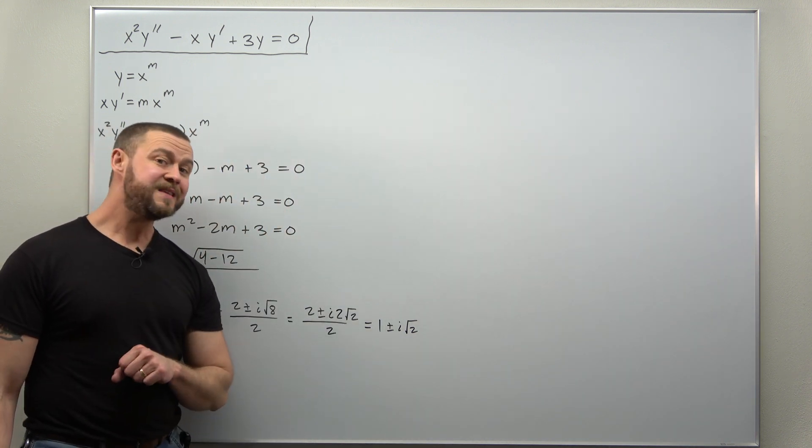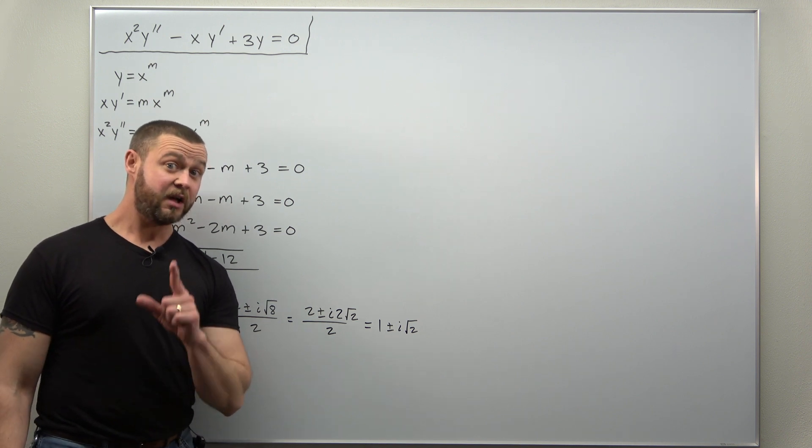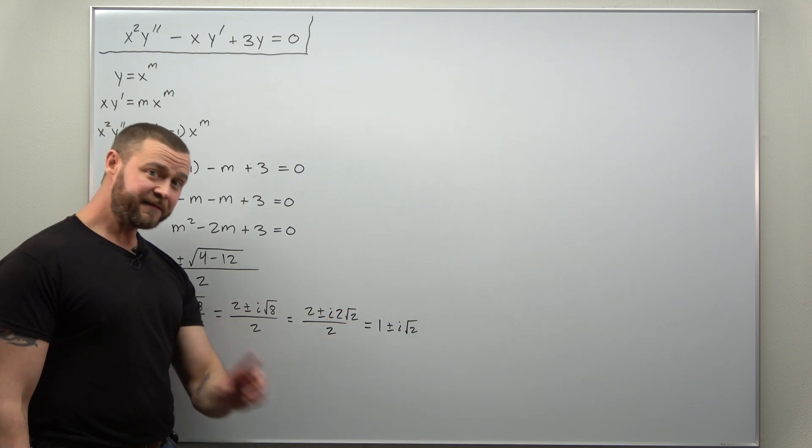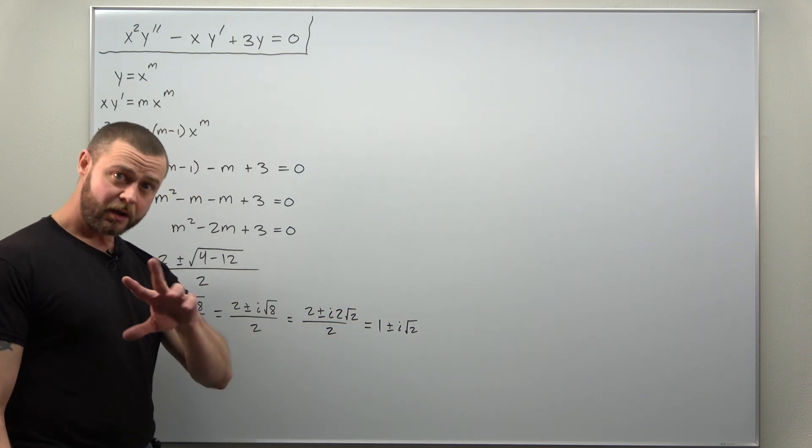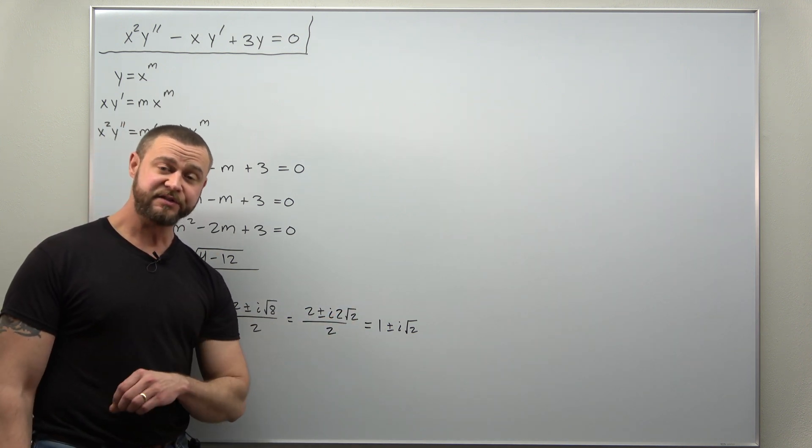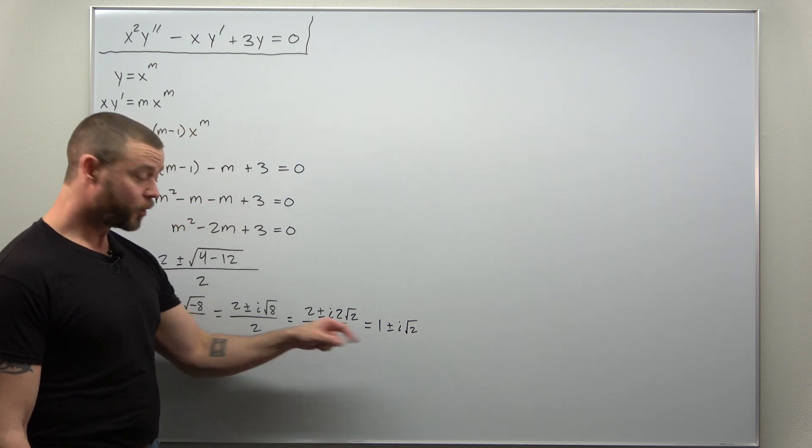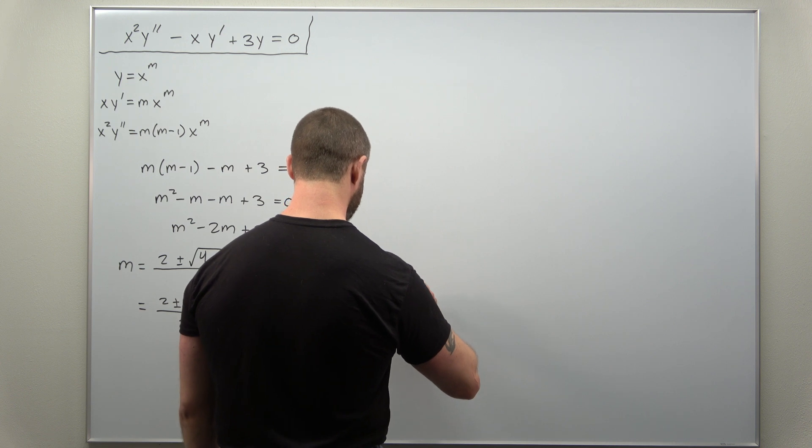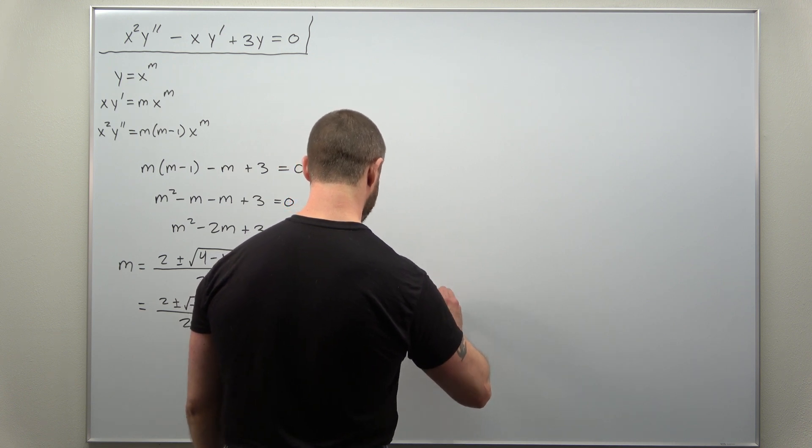Now, like the case for complex characteristic roots to a second order ODE with constant coefficients, we identify the real imaginary parts, but we just give them different symbolic quantities now. We're going to call our real part alpha and the imaginary part beta.